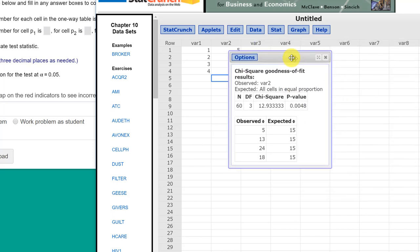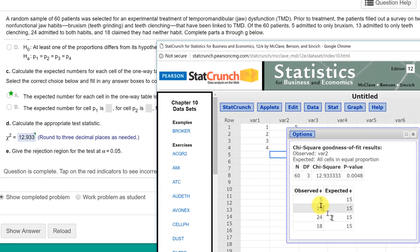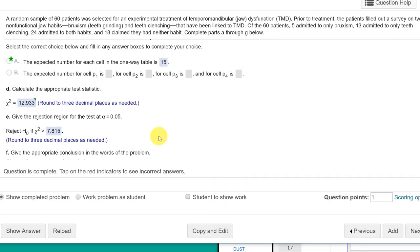And we get here our output. Here are our observed and expected values. There's our chi-square test statistic, and there's our p-value. Now let's go through and look at the questions. The next one is the expected number for each cell is 15, which we're given there. And the test statistic is 12.933, which is what the value we have there. And it doesn't want p-value, it wants the rejection region.